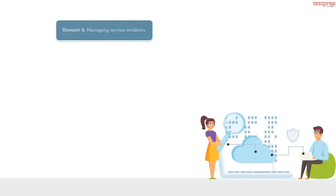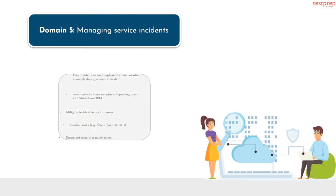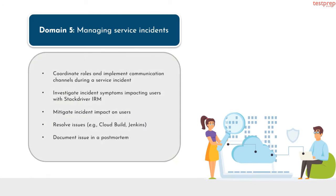Domain 5: managing service incidents. It contains five subtopics: First, coordinate roles and implement communication channels during a service incident. Second, investigate incident symptoms impacting users with Stackdriver IRM. Third, mitigate incident impact on users. Fourth, resolve issues, for example, using cloud build or Jenkins. Fifth, document the issue in a post-mortem.